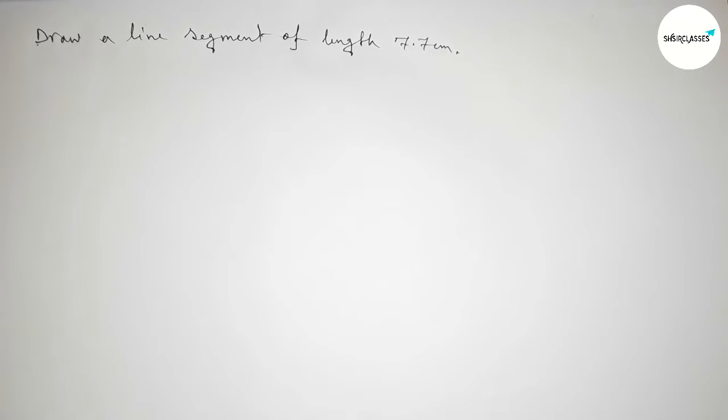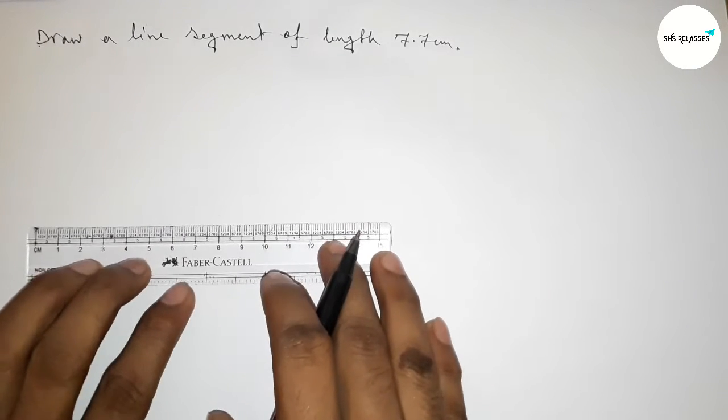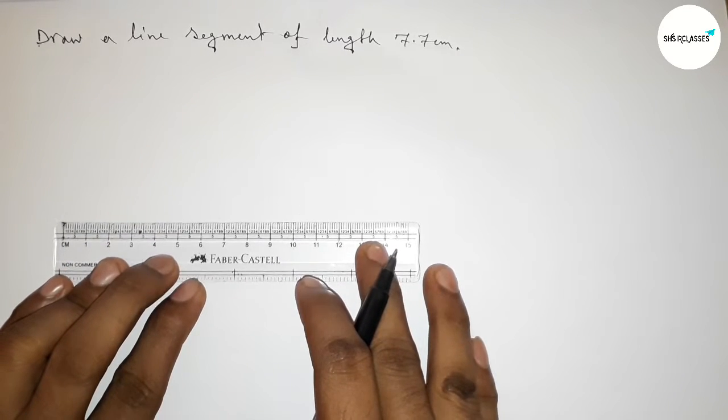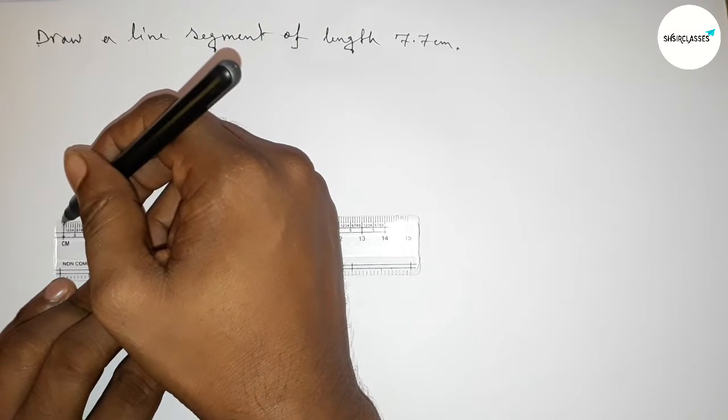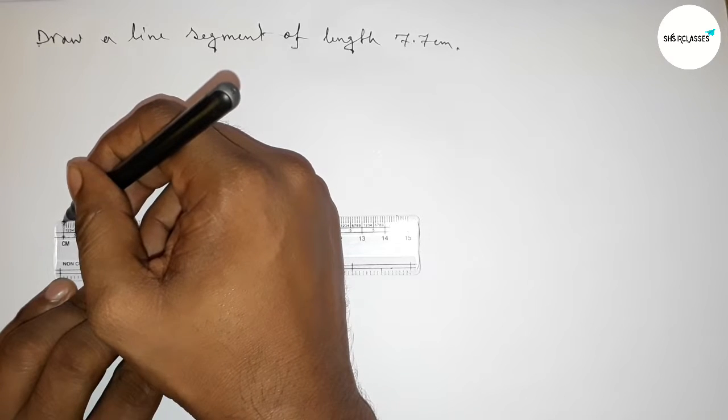Let's start the video. First of all, we have to put the scale perfectly here, then measure the length 7.7 centimeters. First counting, this is starting zero.